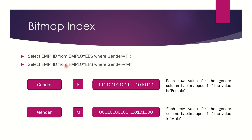Similarly, when we execute 'SELECT employee_id FROM employees WHERE gender = M', all the row values where gender = M will be bitmapped as 1. All other values — whether null, F, or any other value — will be bitmapped as 0. When this query is executed, only the 1s will be picked up and the 0s will be discarded. The bitmapped 1s are then converted back into row IDs to fetch the associated row values.